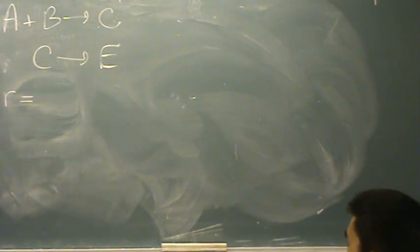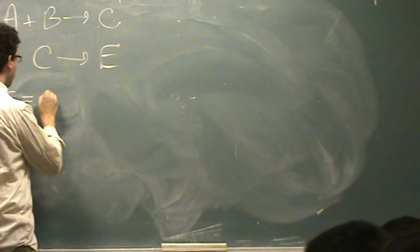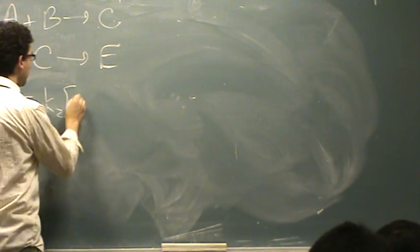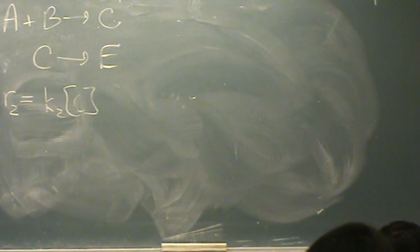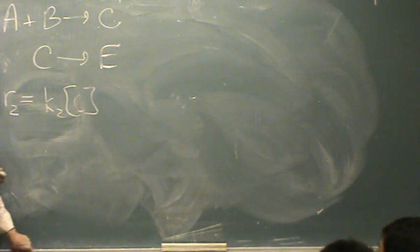So I want to solve for rate 1 or 2? 2, that's the one that makes the product, so that's K2 times C. Now I want an expression for C because he's my intermediate, and it shouldn't be in my final answer.